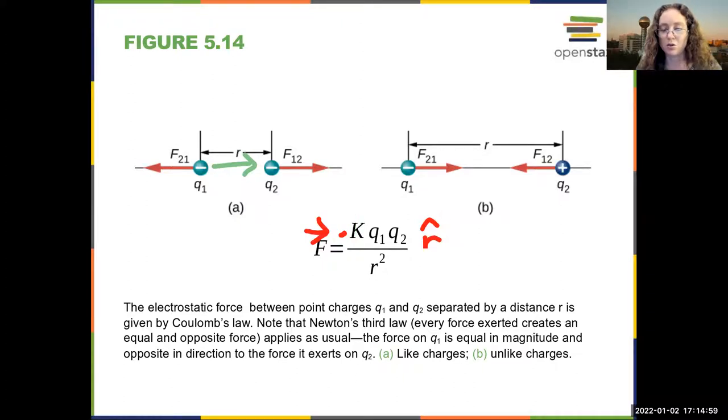So my vector for the force of one on two, and I can even add some fancy subscripts, so the vector from one to two. So the force from two is going to point in the opposite direction of r hat, as you can see right here.